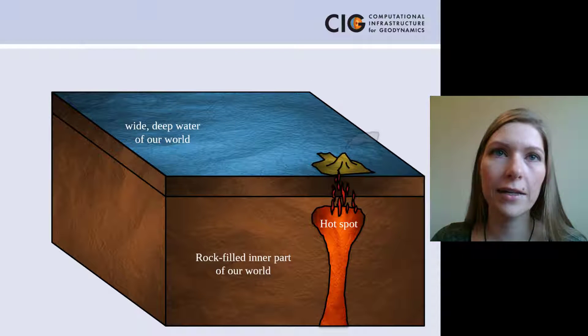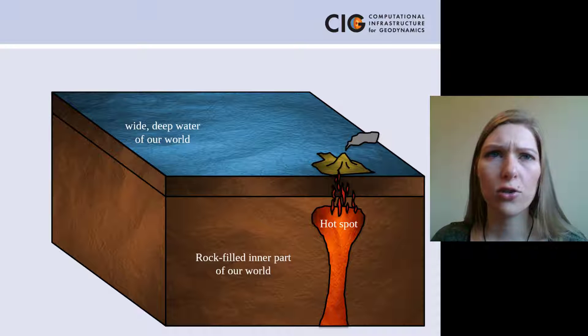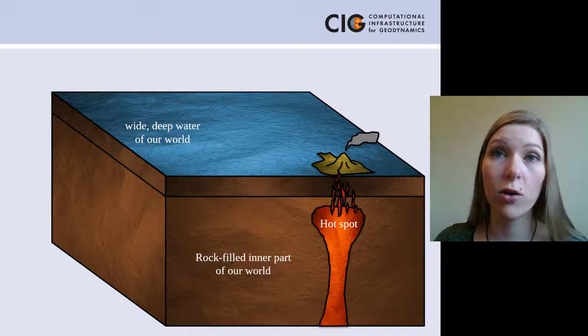These pieces of land are formed because they lie on top of hot spots in the inner part of our world. They are so hot that the rock changes, it becomes soft like water and it goes up to the top of the world really quickly, where it is thrown out as fire, little rock pieces and smoke.